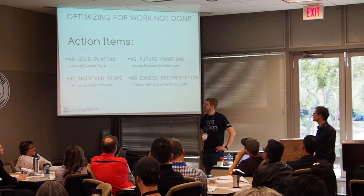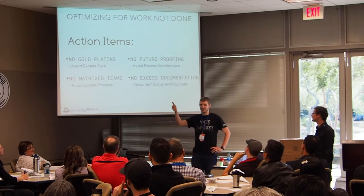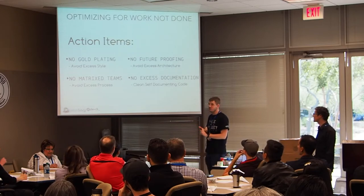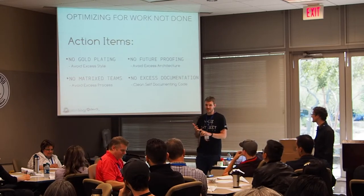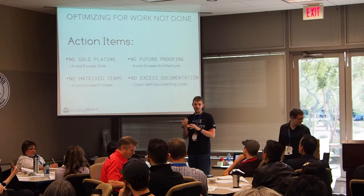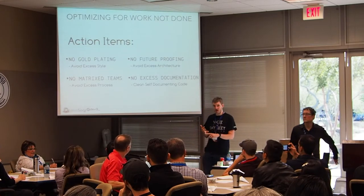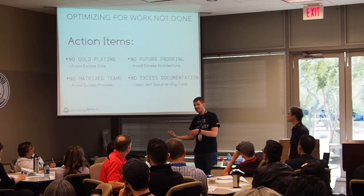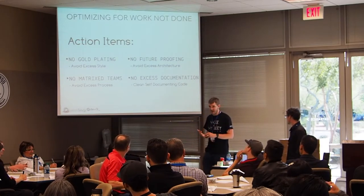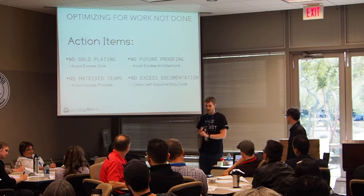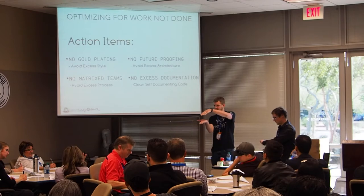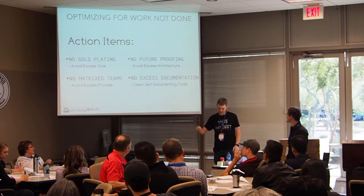Here are some things we can do for just optimizing for work not done. No gold plating — avoid excess style on your first release, just see if it even works. No future-proofing — we don't need three layers of interfaces, abstractions, and architecture for scaling when we don't even know if we have a platform yet. No matrix teams — we should be reducing communication overhead; if UX, product, business, customer, and engineers all sat together, we wouldn't have to set up meetings and wait weeks while our items go stale. And finally, no excess documentation — our code should be self-documenting and clean.